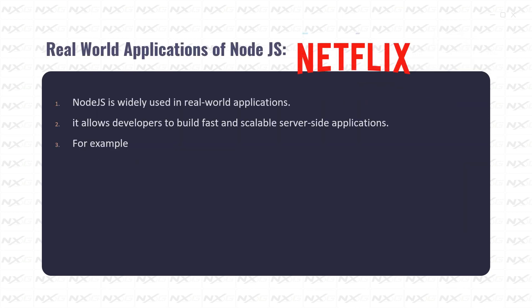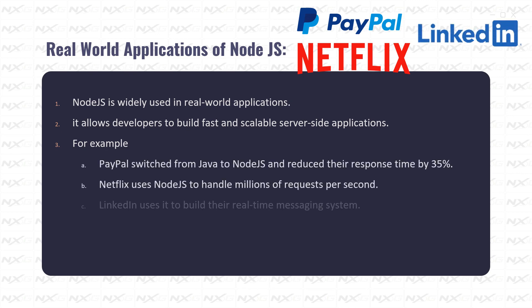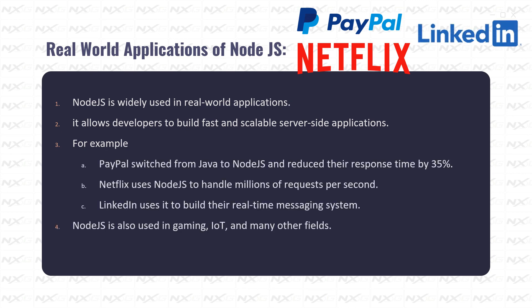Real-world applications of Node.js: Node.js is widely used in real-world applications because it allows developers to build fast and scalable server-side applications. For example, PayPal switched from Java to Node.js and reduced their response time by 35%. Netflix uses Node.js to handle millions of requests per second, while LinkedIn uses it to build their real-time messaging system. Node.js is also used in gaming, IoT, and many other fields.